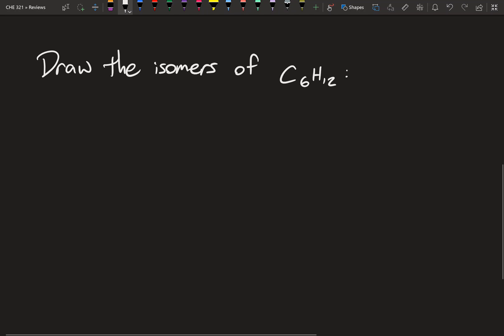And to start off, we're going to be trying to draw all the constitutional isomers of C6H12. I should really write constitutional over there because if I wrote isomers, that's a pretty blanket term, and that could give you a lot more structures to be drawing. So we're going to try to draw the constitutional isomers of C6H12.